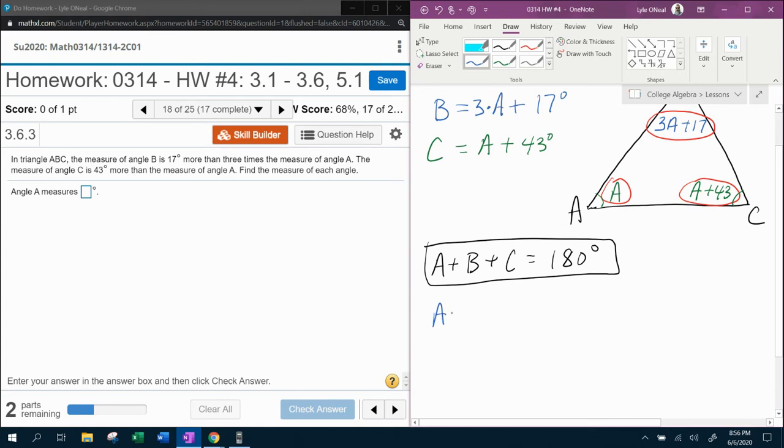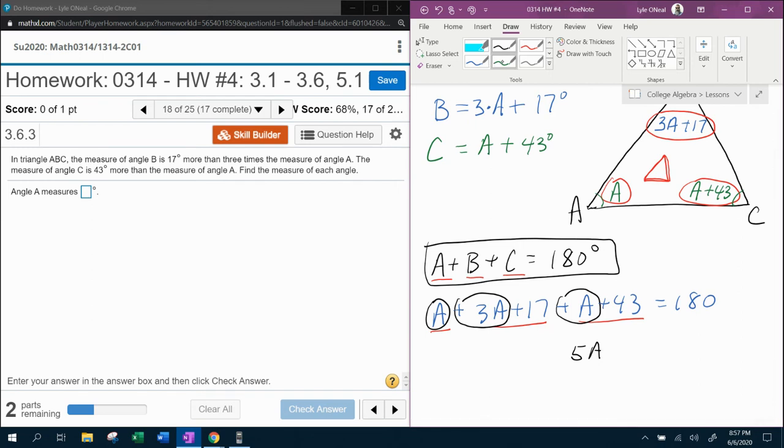So angle A, remember A was just A. B was 3A plus 17, and C was A plus 43. So I don't know if you understand what just happened there, but here's A, B, and C, here's A, B, and C, plugging in what we came up with up here into our equation. And so now if I combine like terms, I'm going to be able to solve for A. A plus 3A plus A, that's going to be 5A. And then I've got like terms here and here, 43 plus 17, what is that? I think that's going to be 60. Equals 180.